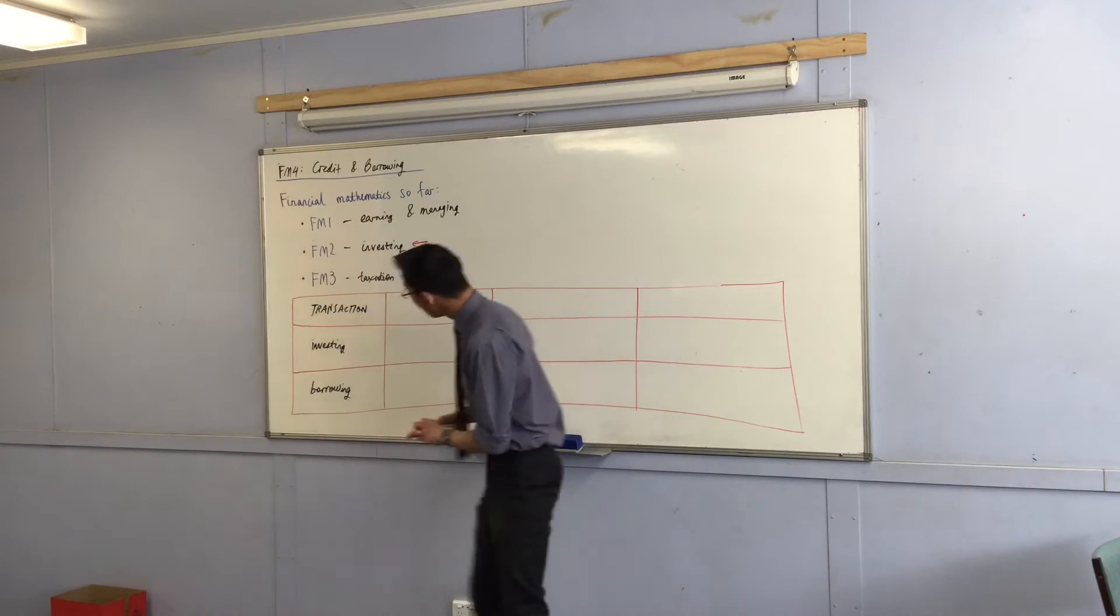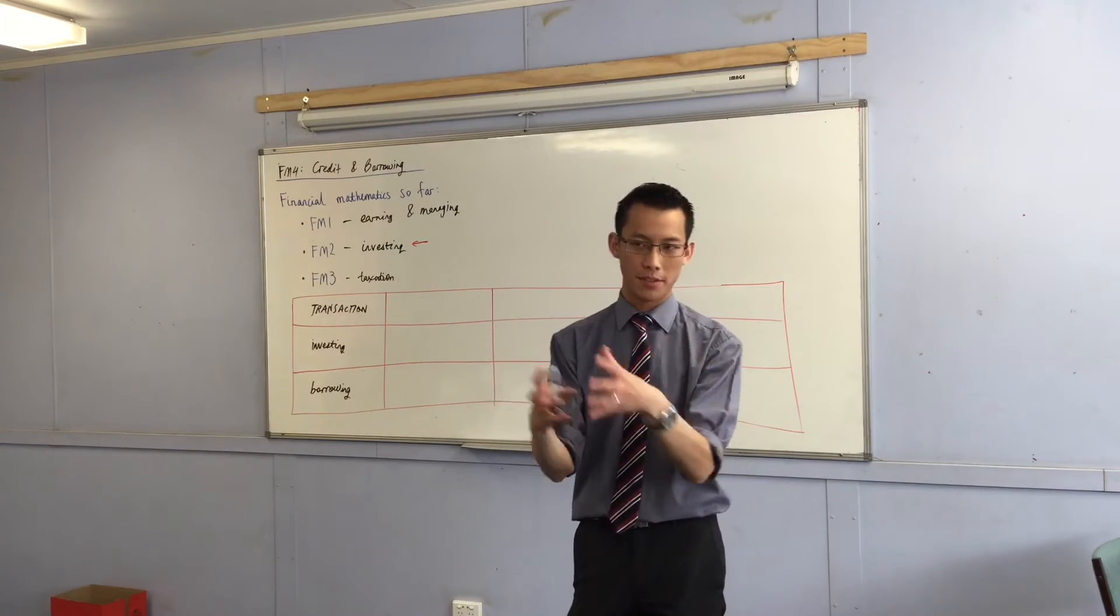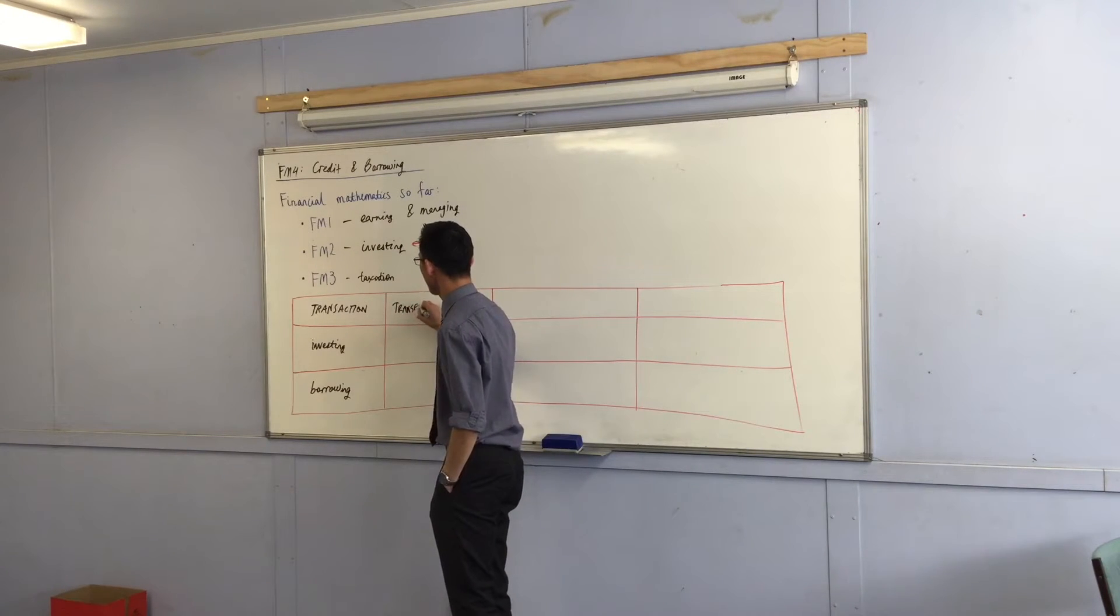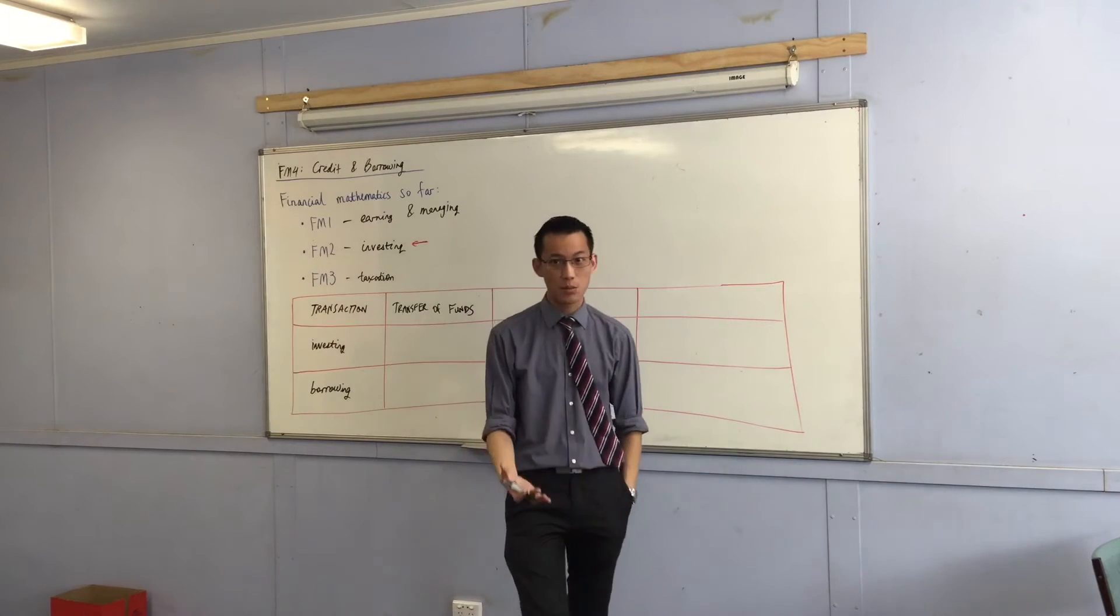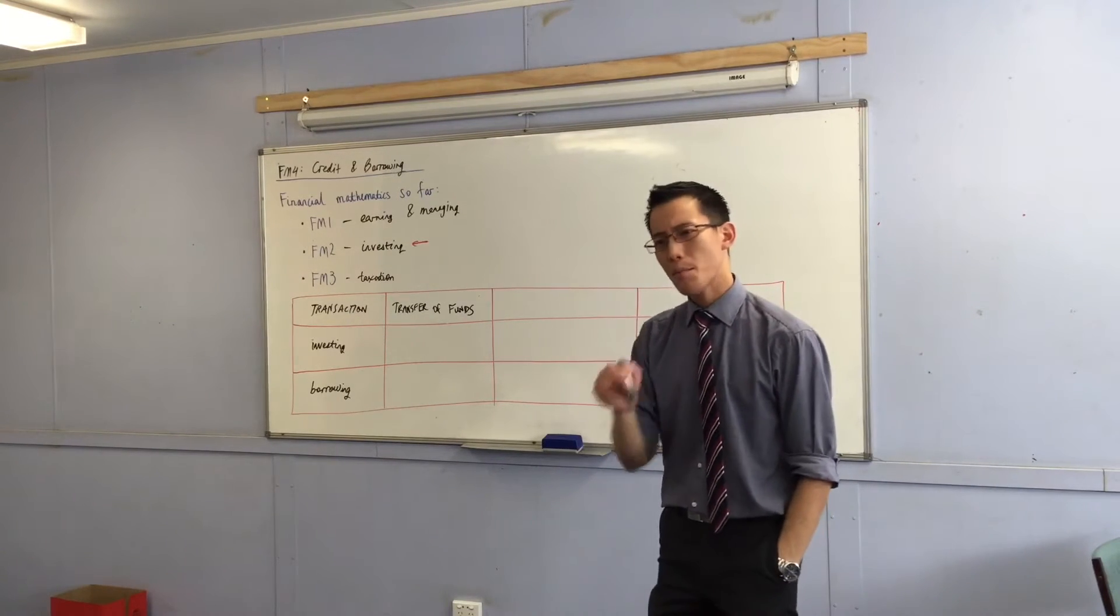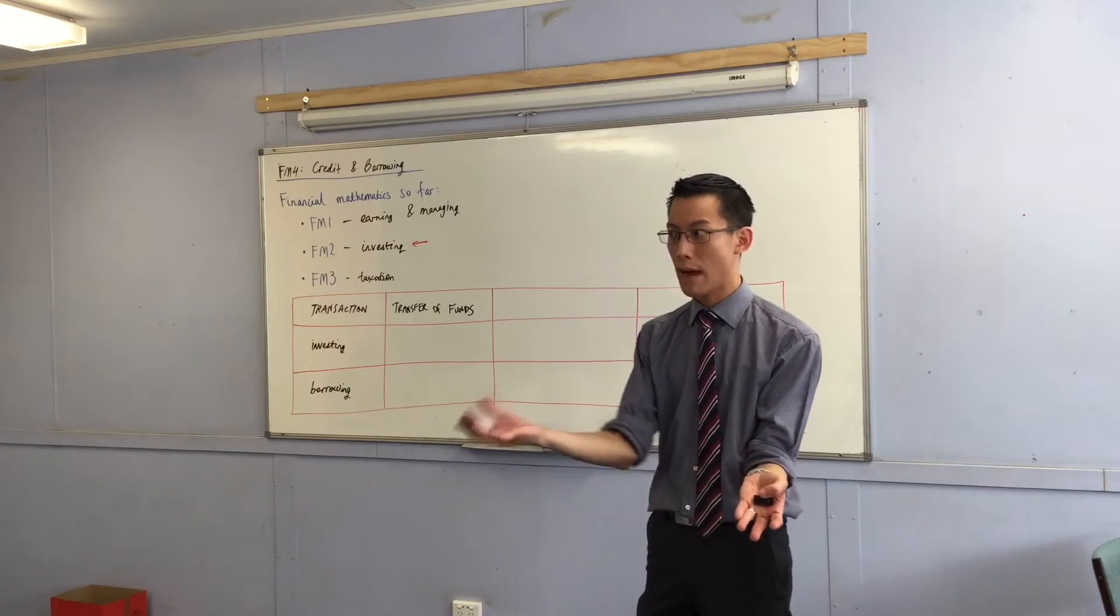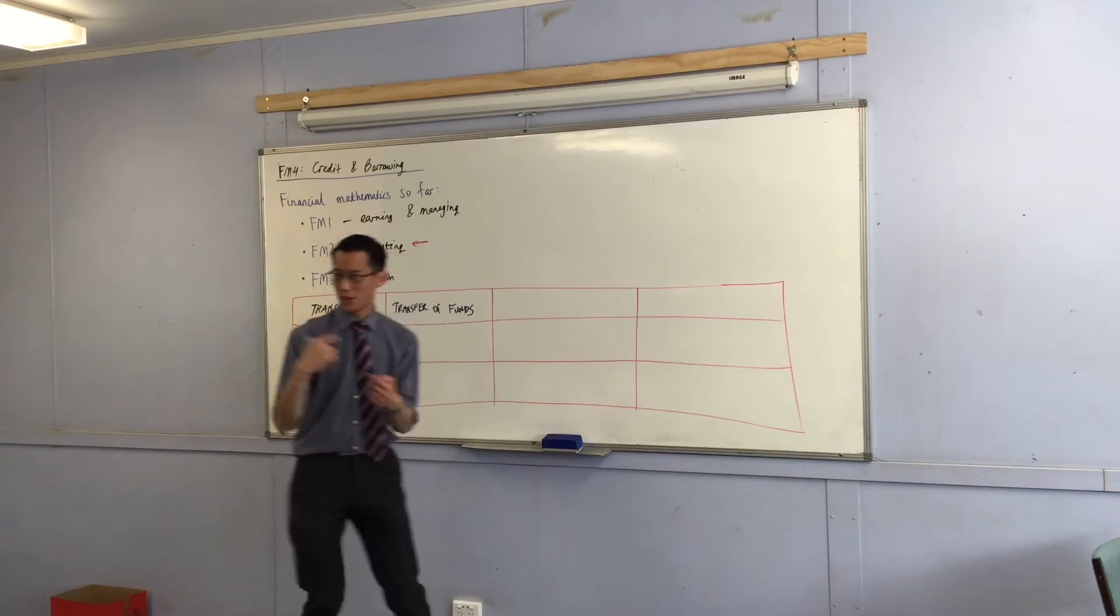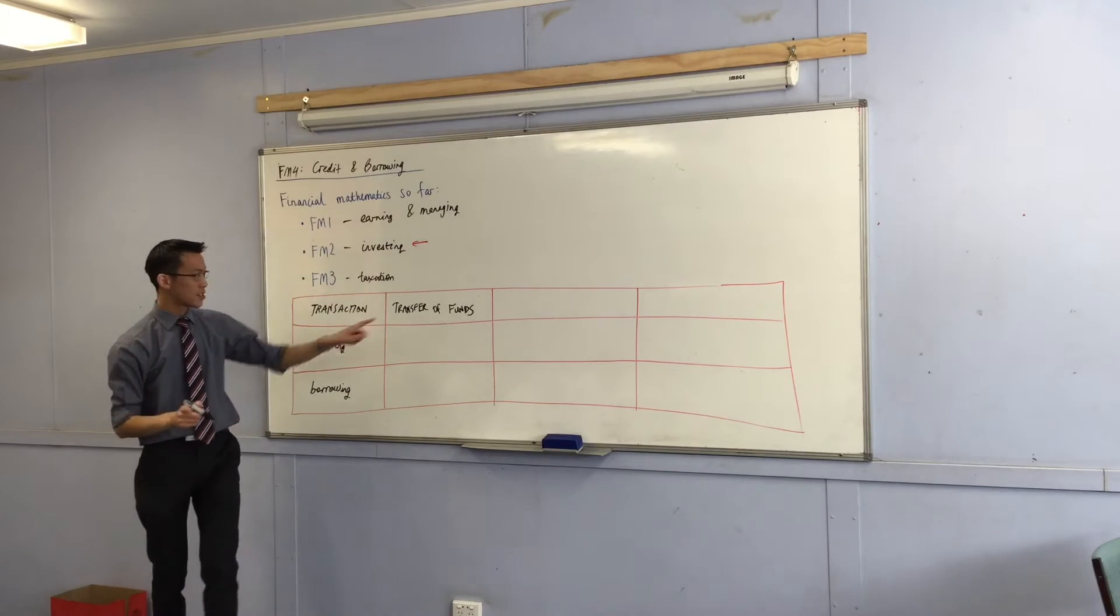Now in both investing and borrowing there is a temporary change of hands in terms of funds, so there's a transfer of funds. If you were investing in some shares, you bought some shares off of the stock exchange, where are the funds being transferred from and to? Who has the money and who's giving it to someone else? When you're investing, where are the funds going?